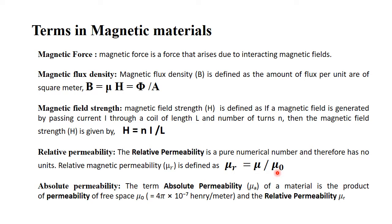Relative permeability μr is the permeability divided by air permeability. It is a pure numerical value and has no unit. Absolute permeability μ is the total permeability of a material; μ₀ is the air permeability. The absolute permeability of free space is 4π × 10⁻⁷ henry per meter. If you multiply relative permeability by free space permeability, you get absolute permeability: μ = μr × μ₀.